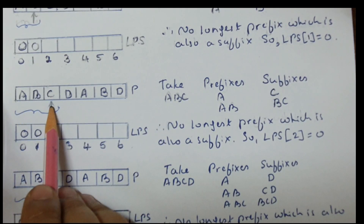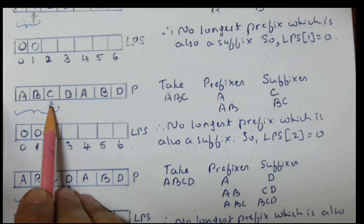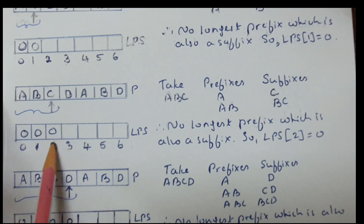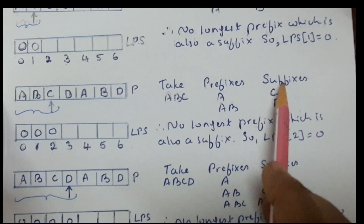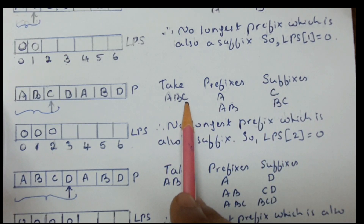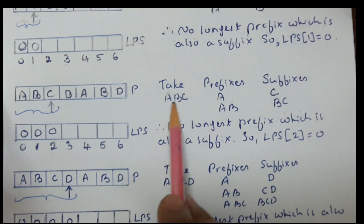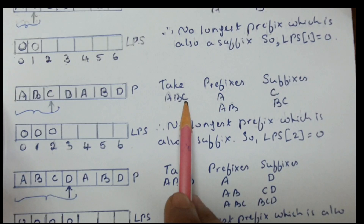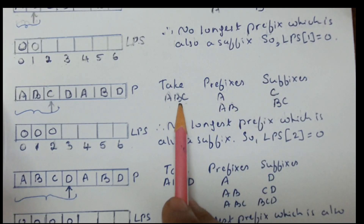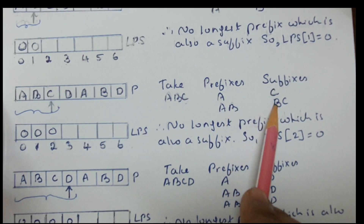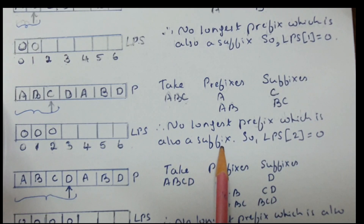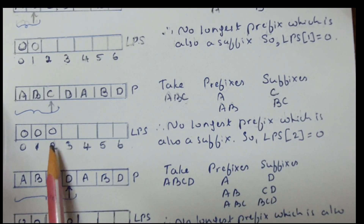Step 3: the marker is placed on the third position, so three characters ABC are considered, filling LPS[2]. Prefixes are A and AB; suffixes are C and BC. Comparing: none are equal, hence no longest prefix which is also suffix. LPS[2] = 0.